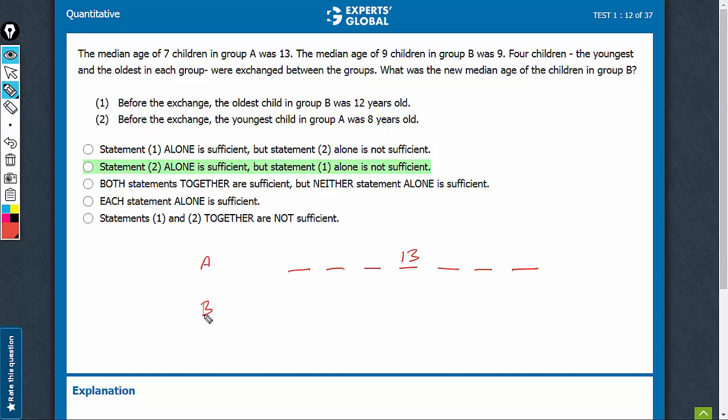Group B has 9 kids. So, 9 kids and the median is 9.